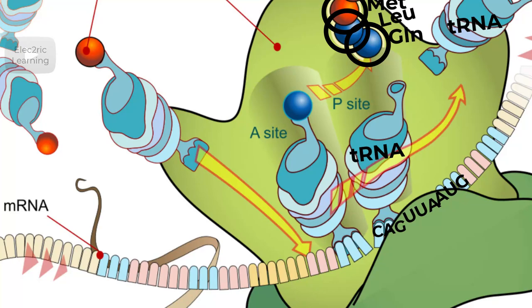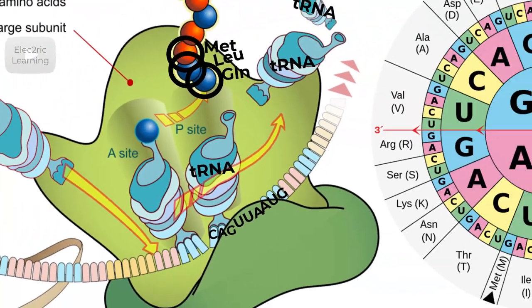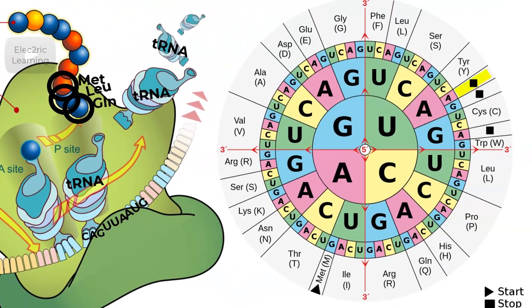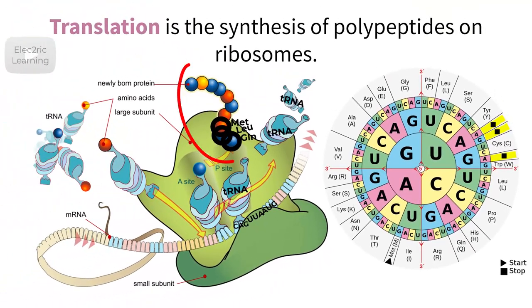This process continues to happen until the ribosome reads a codon that signals for the process to stop, which is either UAA, UAG, or UGA. When the process stops, the long amino acid chain that was built leaves the ribosome and folds into a final structure to perform the function that it was built for. So the gist here, we took the messenger RNA sequence that was originally copied from the DNA and created a unique protein from it. The process of translation is complete.